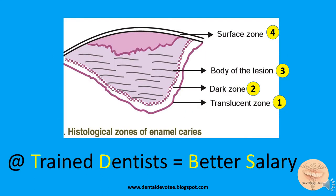These different zones of enamel caries can be memorized easily by the mnemonic 'trained dentist better salary.' The initials of each word give us the clue for the different zones from the inner part of the lesion to the outer surface: translucent zone, dark zone, body of the lesion, and surface zone.